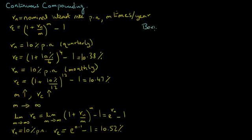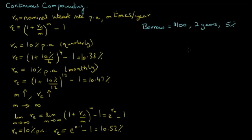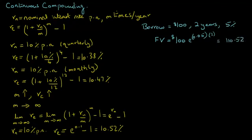Suppose you borrow $100 from a bank for two years, and the bank charges you an interest rate of 5% on this loan with continuous compounding. What is the amount of money that you will owe back to the bank at the end of two years? The future value of this loan repayment equals $100 times the exponential of 0.05 times 2, which equals $110.52.